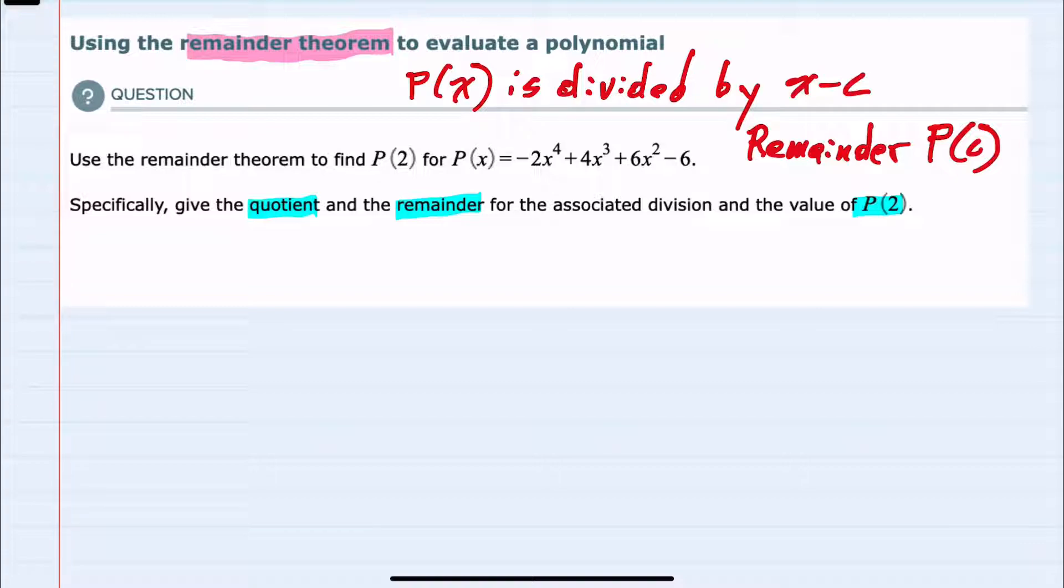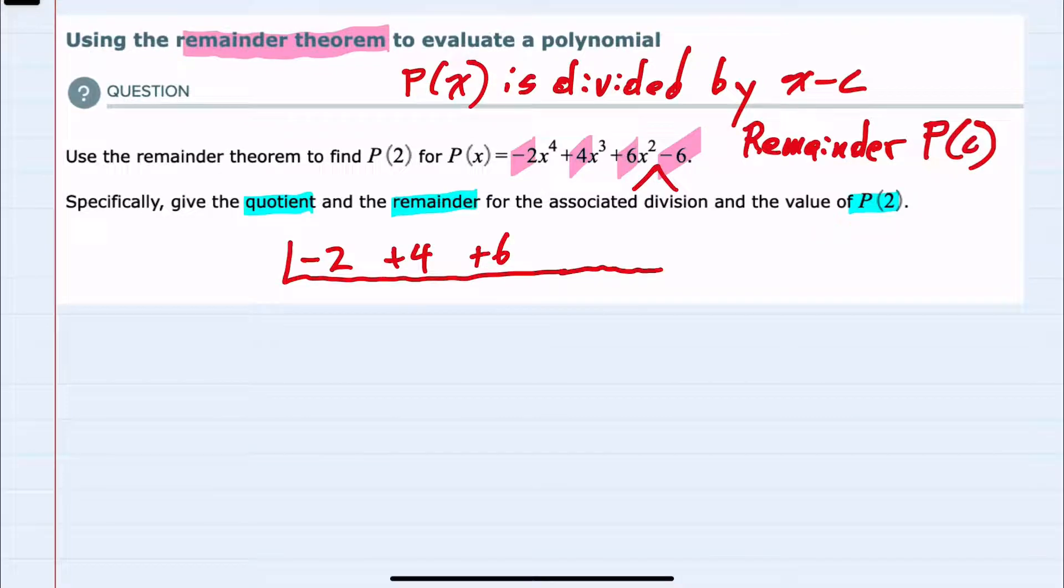And for this example since we just did synthetic division I'll use that here, looking at my leading coefficients and noticing that I do have one missing here. I don't have an x term so I'll need to insert that between these two coefficients. But otherwise my coefficients are negative 2, that's the first one, then a plus 4, plus 6, then I would need the 0 placeholder, and finally a minus 6.